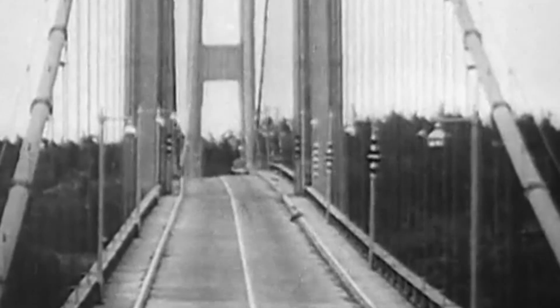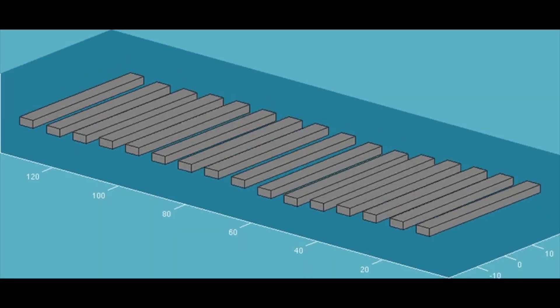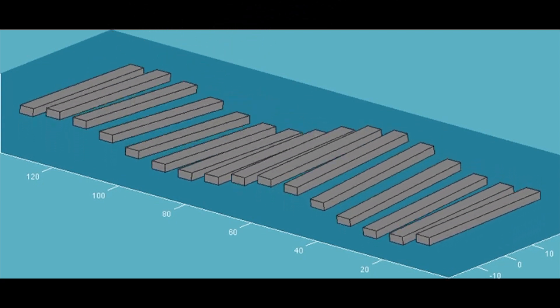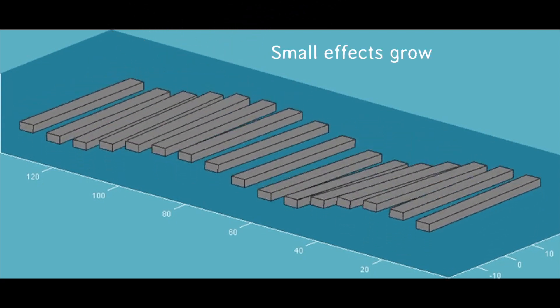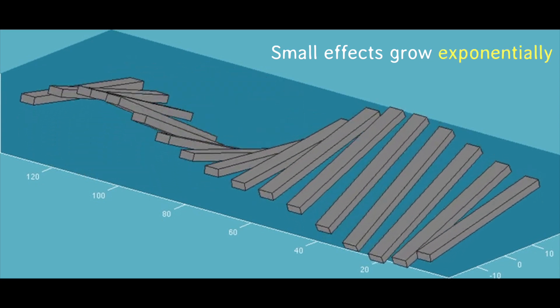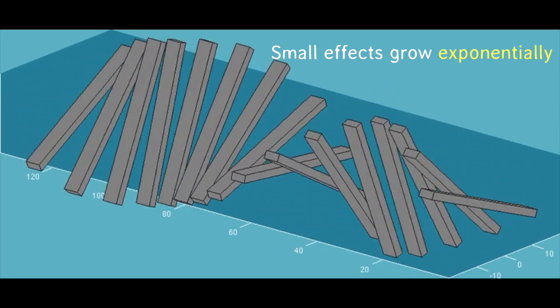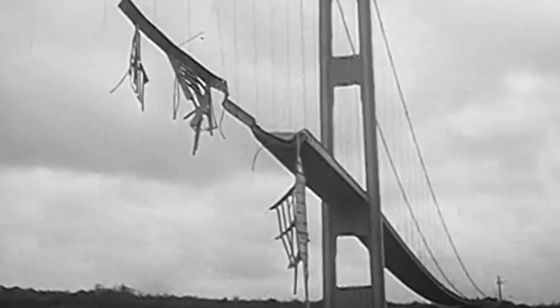But the designers didn't know that the torsional dynamics were unstable. If enough energy flowed into the bridge, from the wind or by any mechanism at all, even the tiniest initial twist became amplified, exponentially blowing up into a catastrophic torsional wave. A valuable, if expensive, lesson in engineering instability.